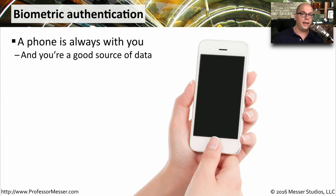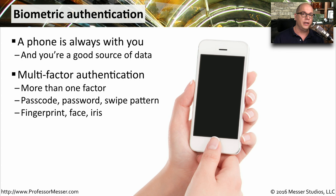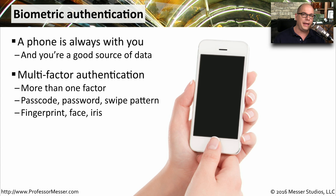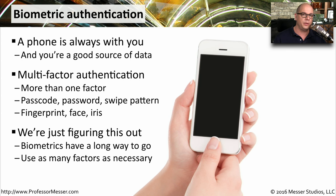Using biometrics as a form of authentication to our mobile device just makes sense. We're always with our devices, and using part of ourselves becomes a natural way to authenticate. It's very common to use this multi-factor authentication with something that we are — for instance, it might be a fingerprint, face recognition, or even an iris or some other part of our body. We're really just at the very beginnings of figuring out the best way to use biometrics with our mobile devices, and we'll certainly see this part of authentication evolve as the years go on.